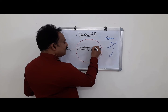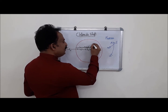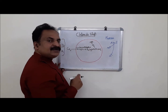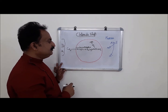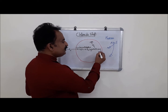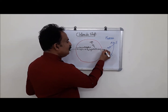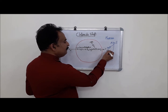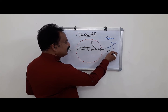H+ ions will combine with oxygen-free hemoglobin and form hemoglobinic acid, HHB. Bicarbonate ions will diffuse into the blood plasma and combine with sodium ions to form sodium bicarbonate, NaHCO3.